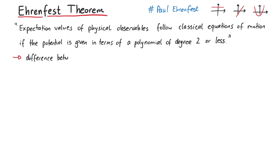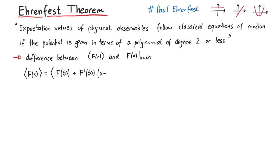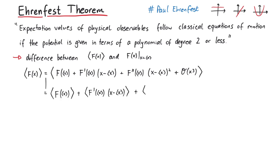In order to see how exactly these two expressions are different, let us expand the expectation value of the force into a Taylor series around the point where x is the same as its expectation value. We do this up to second order, and write everything else as O(x³). Around all of those terms we have an expectation value. But since the expectation value is a linear operation, we can write this as the sum of several individual expectation values. In the first term, we have the force evaluated at the expectation value of the position operator — this is just a number, so we can remove the expectation value here.